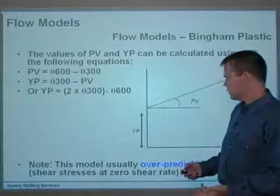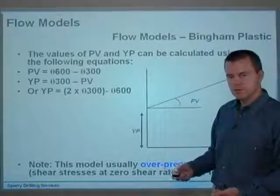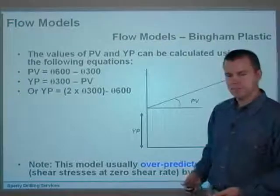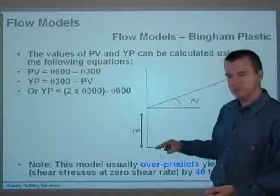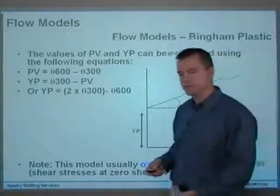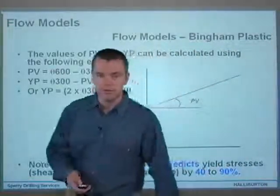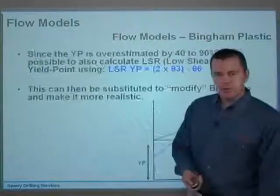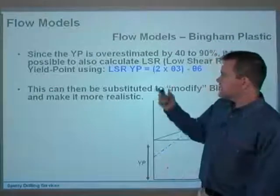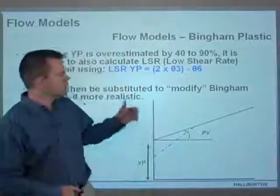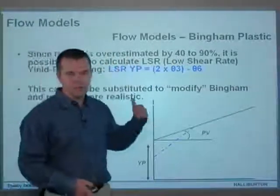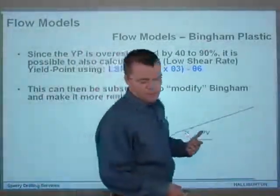So as I say, for annular hydraulics, Bingham's actually over-predicting your shear stresses at this zero shear rate or at low shear rates by somewhere between 40 and 90%, which is significant, really. How can we overcome this? Well, one way that we can overcome it is, since it's overestimated by 40 to 90%, it's actually possible to calculate the low shear rate yield point using this equation here.